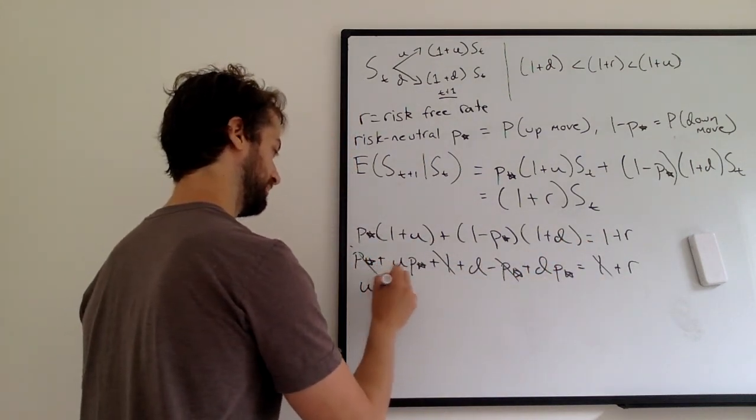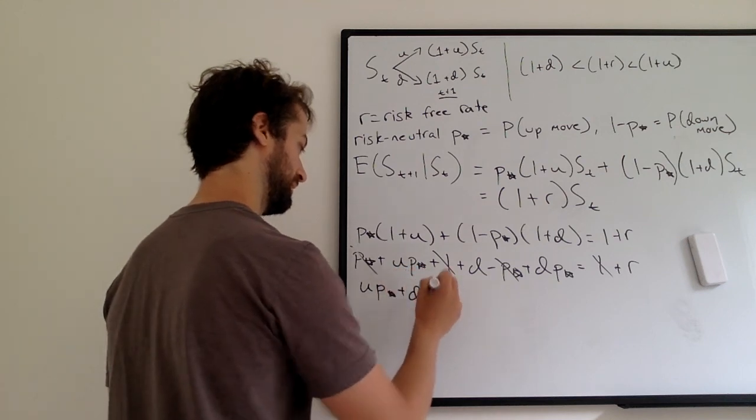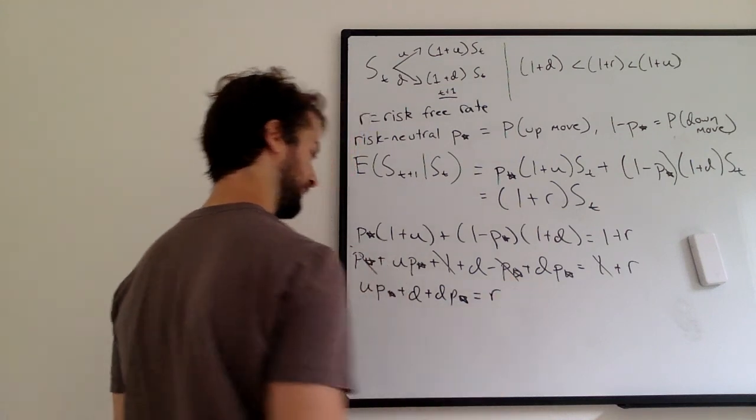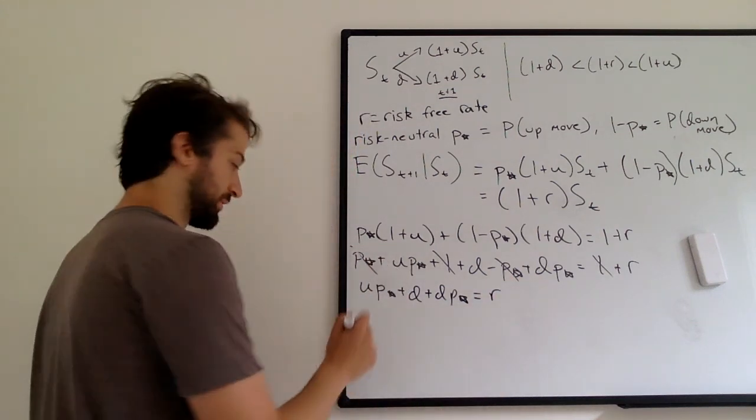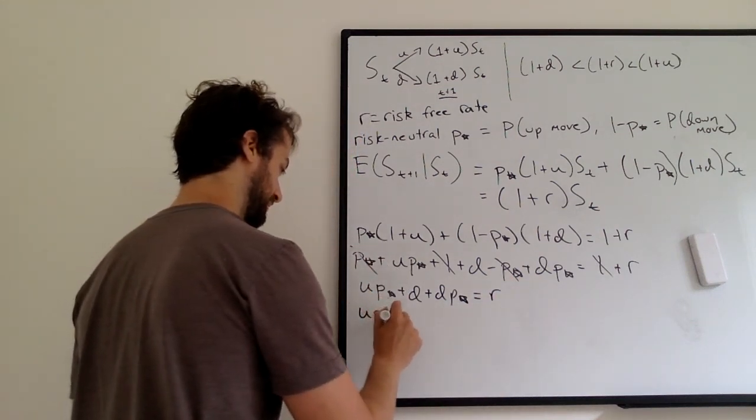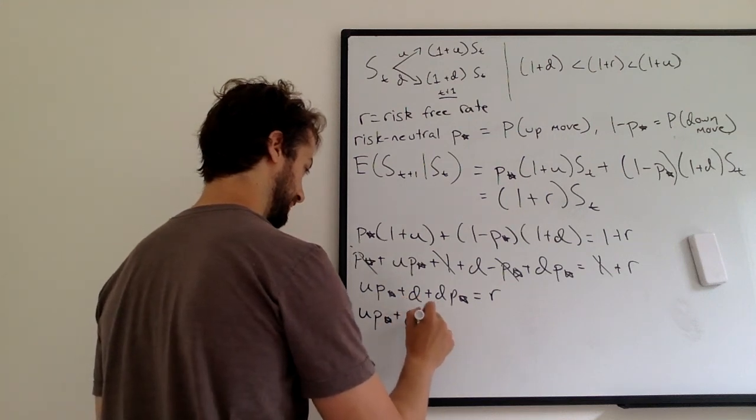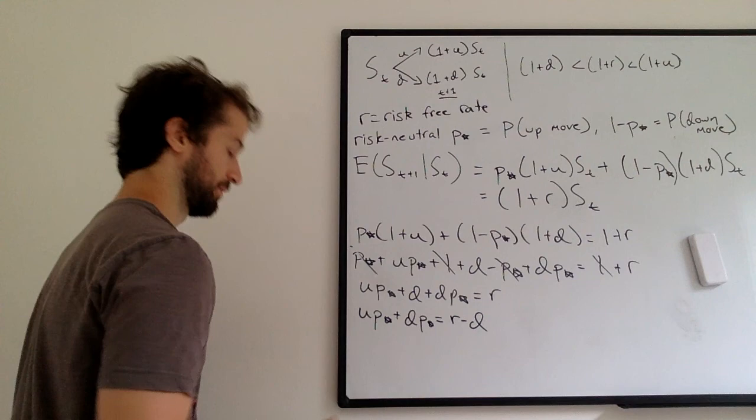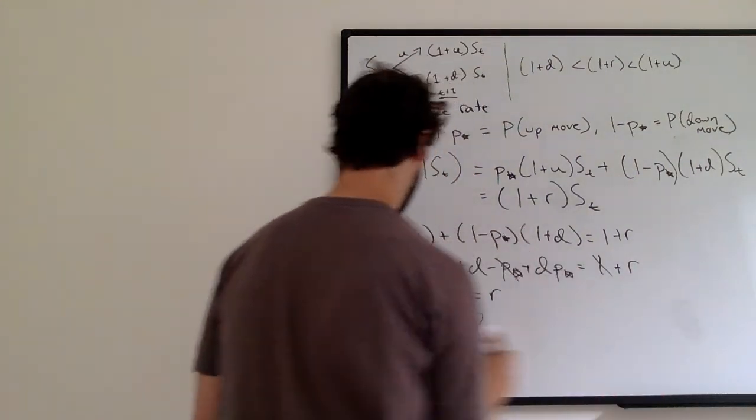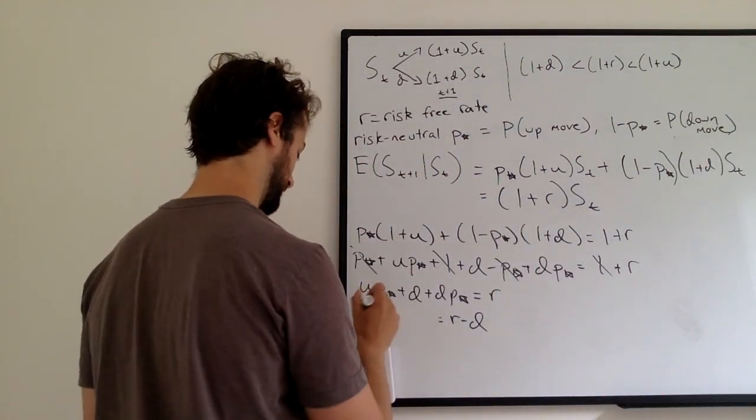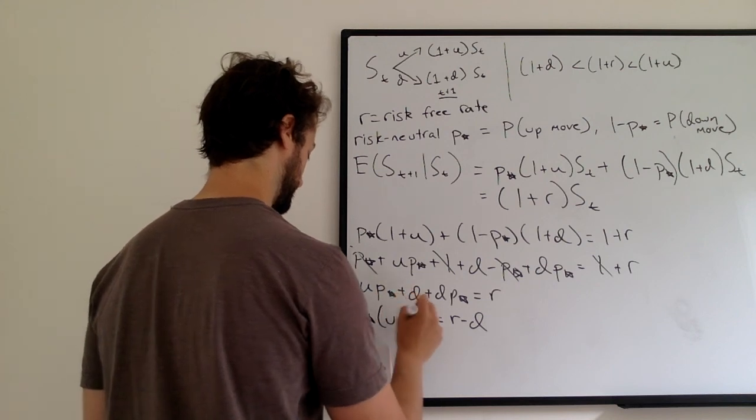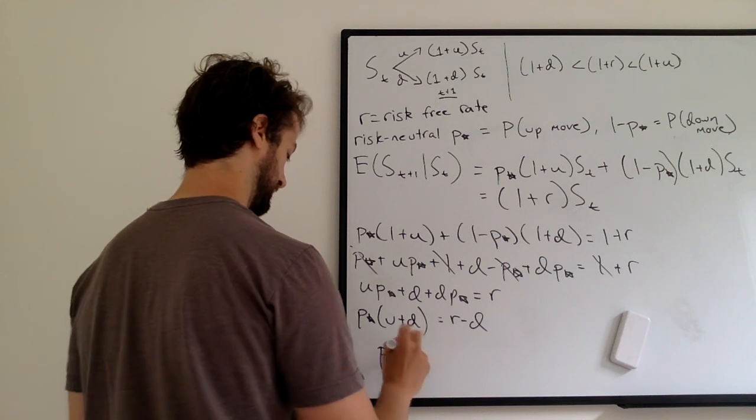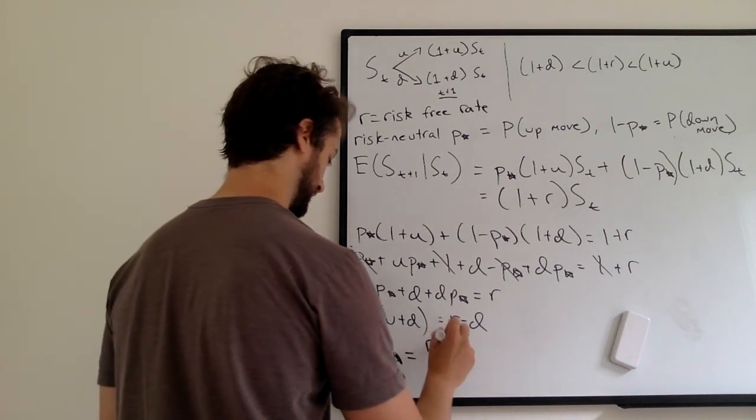So we're left with U P star plus D plus D P star equals R. I'm going to subtract D to both sides. U P star plus D P star equals R minus D. And I'm going to factor out P star. So P star U plus D. And then I'm going to divide by U plus D. So P star equals R minus D.